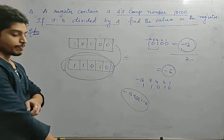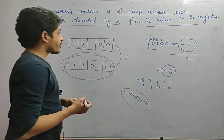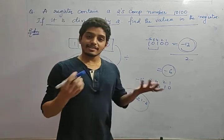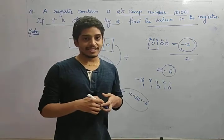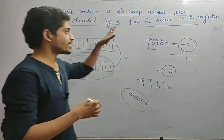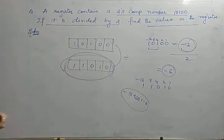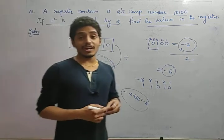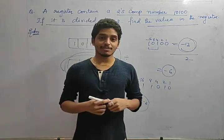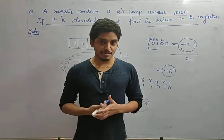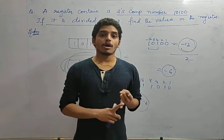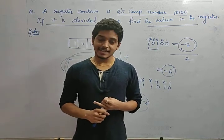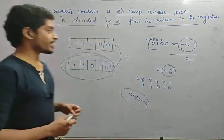In this way we perform 2s complement, 1s complement, and sign-magnitude representations. I hope you understand the number system. Now let us go to the next chapter, which is Boolean algebra — very important for logic gates and to solve K-maps.